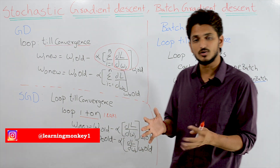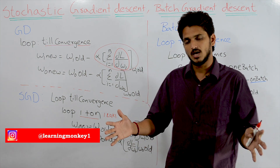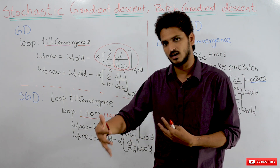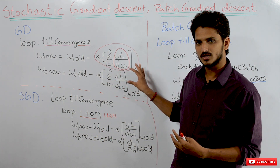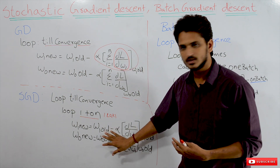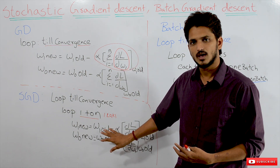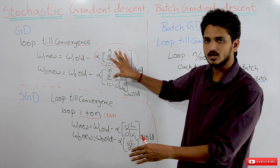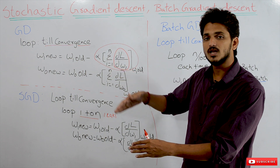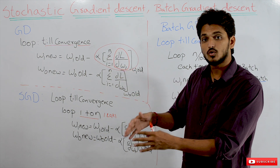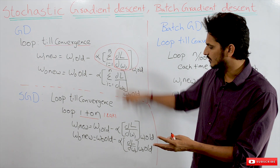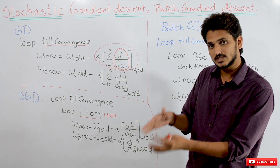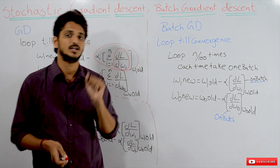If your system is computationally capable and has large RAM, go with gradient descent. If your system does not have large memory and is not computationally strong, go with stochastic gradient descent. The problem with stochastic gradient descent is slow convergence. The problem with gradient descent is that it is computationally difficult. To compensate for both these problems, we use batch gradient descent.